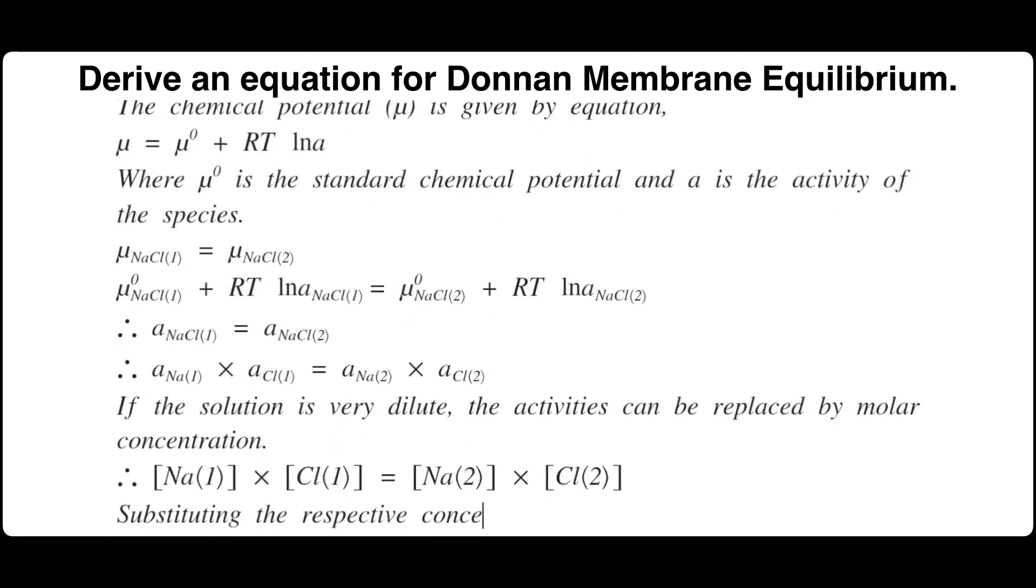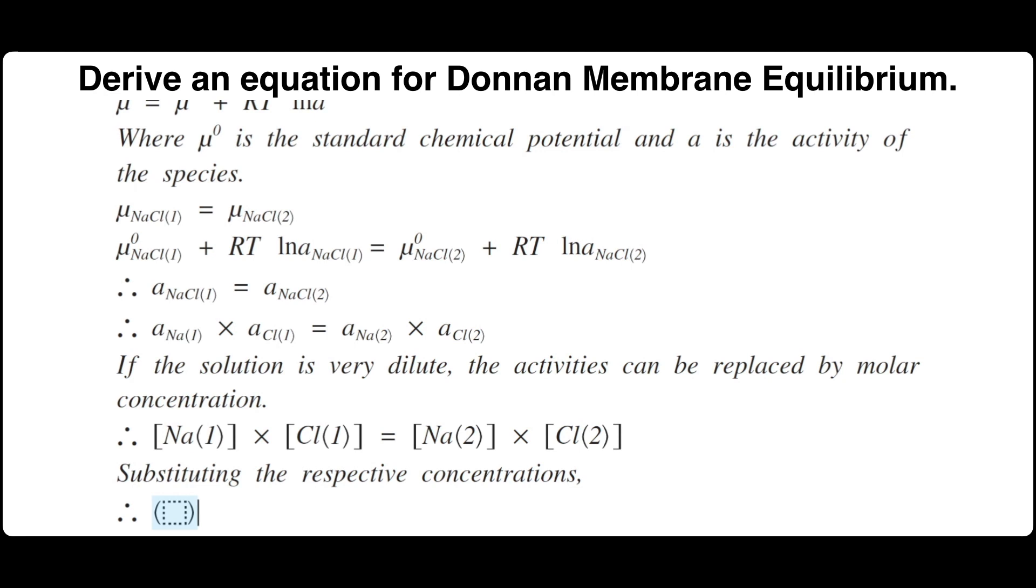Substituting the respective concentrations, concentration of sodium from the first side is C1 minus X and also for the chloride is C1 minus X. So C1 minus X times C1 minus X equals C2 plus X times X.